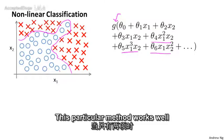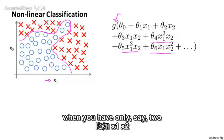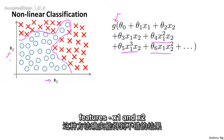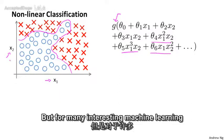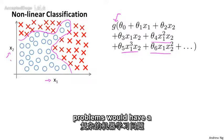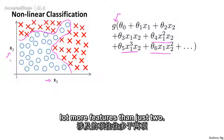This particular method works well when you have only two features, x1 and x2, because you can then include all those polynomial terms of x1 and x2. But for many interesting machine learning problems, we have a lot more features than just two.